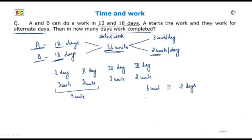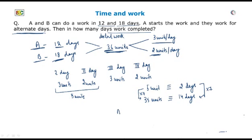5 units of work is equivalent to 2 days. So 35 units of work will be equivalent to 14 days, as 5 into 7 is 35 and 2 into 7 is 14 days. Now, 1 unit of work is remaining to achieve the 36 units total. That could be done by A only. We know that A can do 3 units per day, so A will do 1 unit in 1 upon 3 days.